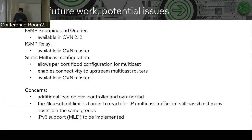Currently, IGMP snooping and querier are available in OVN 2.12. IGMP relay is available in OVN master, along with static multicast configuration, which allows you to define per-port flow configuration for IP multicast traffic and also for reports. This would allow connecting OVN to upstream multicast routers that could run PIM or other routing protocols, also available in OVN master. There are a few concerns: there is some additional load on OVN controller and OVN-NorthD because we need to process packets and install entries in the southbound database. The 4K resubmit limit is still a potential issue — harder to reach now for multicast traffic, but still possible if many hosts join the same multicast group. And finally, IPv6 is not supported yet, so MLD still needs to be implemented.